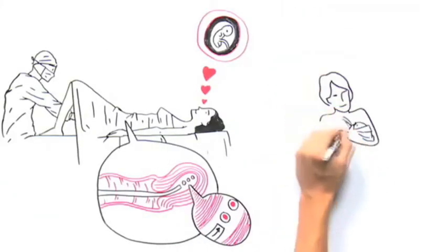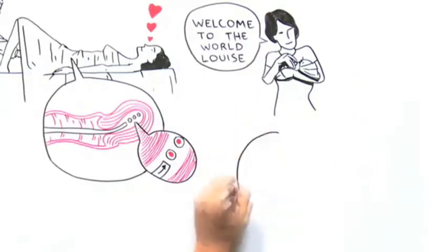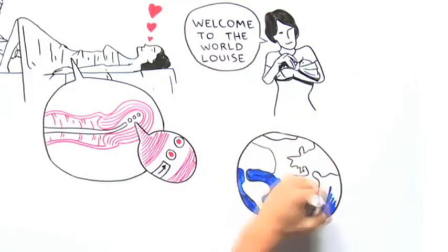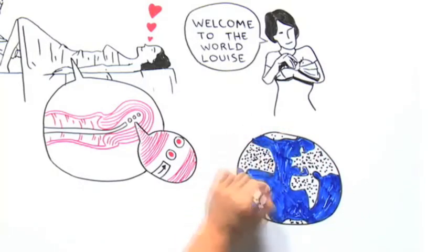The first successful birth of a test tube baby, Louise Brown, occurred in 1978 in the United Kingdom. 3.5 million IVF babies have been born since then, and each year about 200,000 IVF babies are born worldwide.